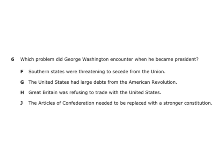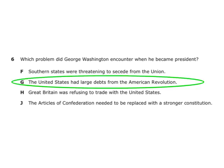Which problem did George Washington encounter when he became president? The United States had large debts from the American Revolution. Just like Great Britain had debts after the French and Indian War, America had debts after the Revolutionary War — which is when Alexander Hamilton wanted to form the National Bank.